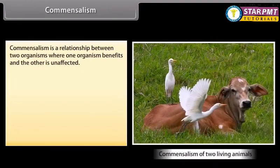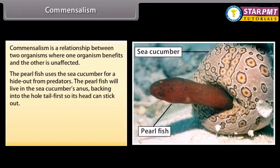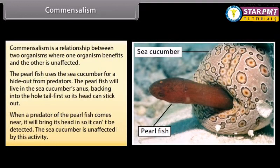Commensalism is a relationship between two organisms where one organism benefits and the other is unaffected. For example, the pearlfish uses the sea cucumber as a hideout from predators — the pearlfish lives in the sea cucumber's anus, backing in tail first so its head can stick out. When a predator approaches, it pulls its head in so it cannot be detected. The sea cucumber is unaffected by this activity.